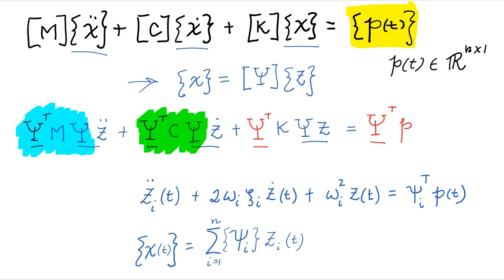And this term right here is going to be equal to omega square. And so each one of these terms we can see right here, this is 1, this is 2 omega psi, and this is omega square.